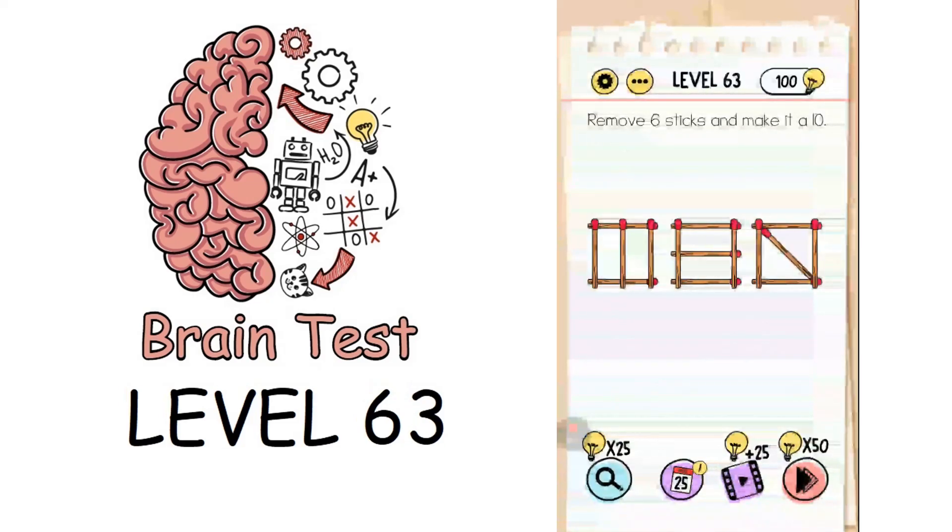Moving on to level 63: remove six sticks and make it a 10. How can we make it 10? We have to make the alphabet TEN. Remove this matchstick, this one, and this one to make T. Remove this matchstick to make E. Then remove two matchsticks to make N.